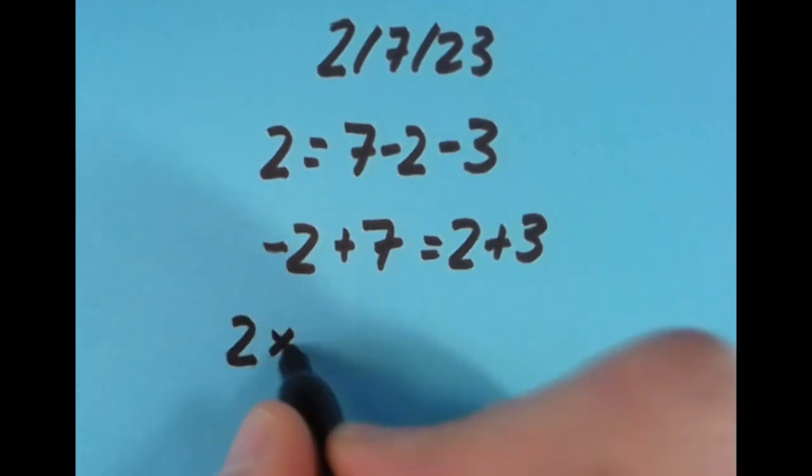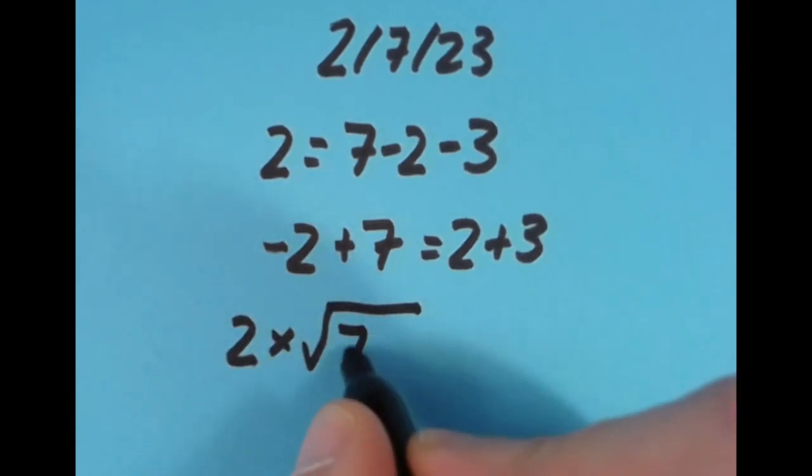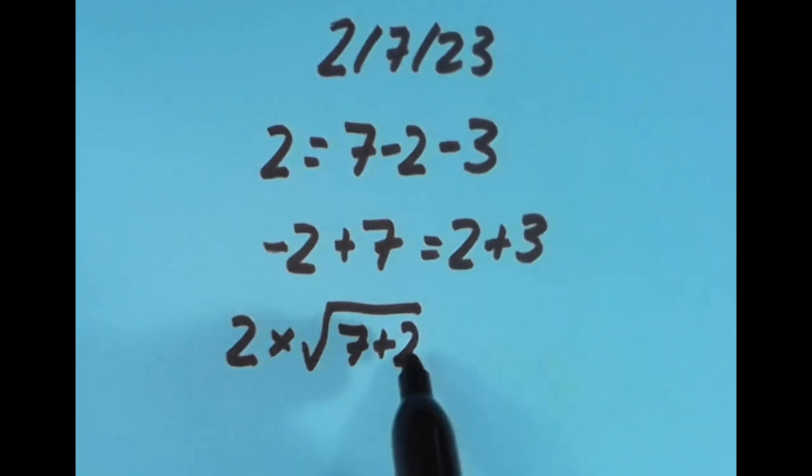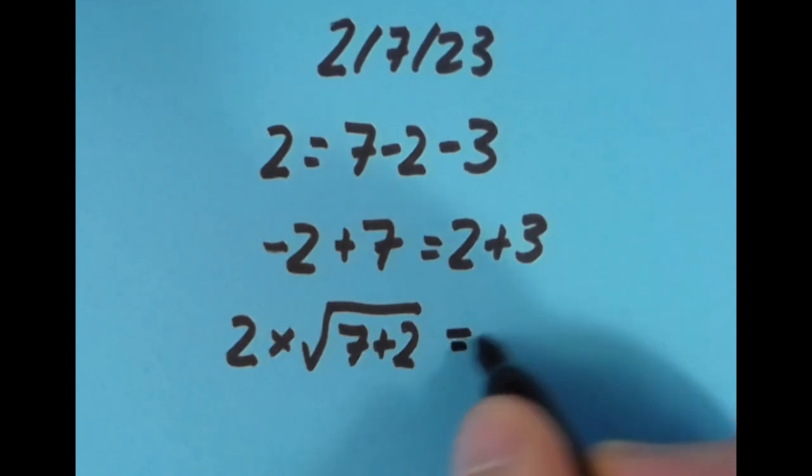And then with the equal sign in the final spot, I did this: 2 times the square root of 7 plus 2. 7 plus 2 is 9, the square root of 9 is 3, 2 times 3 is 6, and so is 3 factorial.